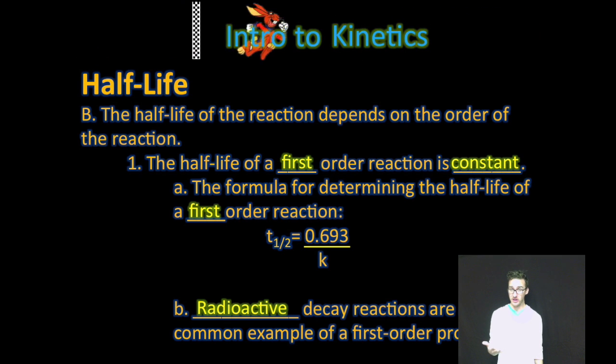And you have a handy-dandy formula that's on your screen, in your notes, and on your formula chart, that tells you how to determine the half-life for a first-order reaction. 0.693 over your rate constant.